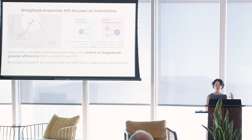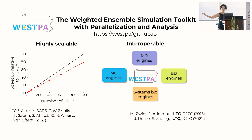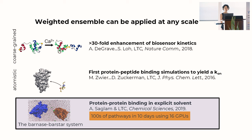These pathways include every state along the process, including transient states too fleeting to capture experimentally — a valuable complement to experimental results. My lab has scaled up this strategy in open source software called WESTPA: Weighted Ensemble Simulation Toolkit with Parallelization Analysis. It scales to thousands of CPU cores and GPUs, is interoperable with any dynamics engine — molecular dynamics, Monte Carlo, Brownian dynamics — and can be applied at any scale. At the coarse-grain level, we published a study enhancing kinetics of a protein conformational switch by at least 30-fold.